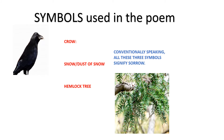Before we go on to the next stanza, I want to take up the symbols that the poet has used so beautifully in this poem — crow, hemlock tree, and snow. Conventionally speaking, all these three symbols signify sorrow. Crow is considered an ugly and inauspicious creature; it is a harbinger of doom and fear. A hemlock tree is poisonous, so when we hear of this tree, we associate it with death. And snow represents the hardships in one's life.